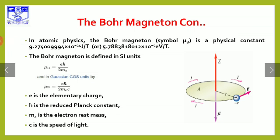In atomic physics, the Bohr magnetron symbol is μB. This is the physical constant equal to 9.274009994 × 10⁻²⁴ joules per tesla. In electron volts, this is 5.7883818012 × 10⁻⁵ eV per tesla. The Bohr magnetron is defined in SI units as μB = eℏ / 2mₑ, and in Gaussian CGS units as μB = eℏ / 2mₑc.